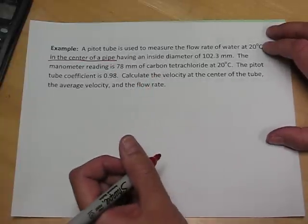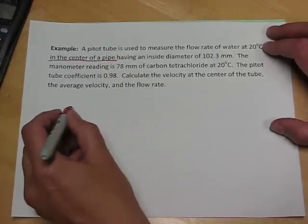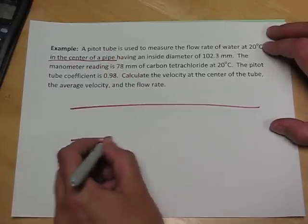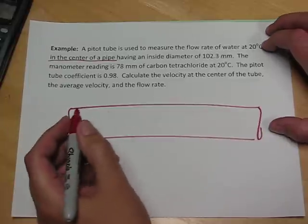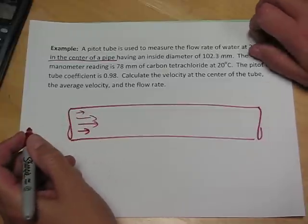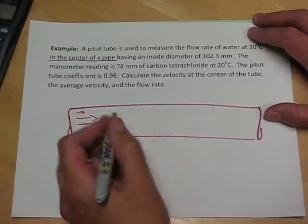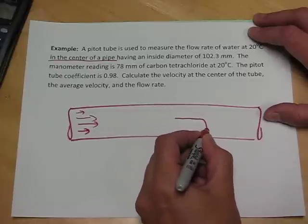So to tackle this problem, the first thing we have to understand is what is a pitot tube. So I'll draw a sketch here of a tube. And there's a flow which varies with position inside this tube, inside this outer tube.